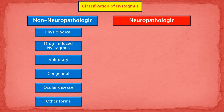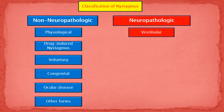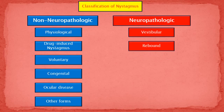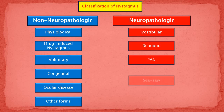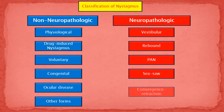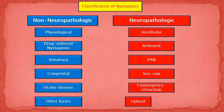Neuropathologic nystagmus includes vestibular nystagmus, rebound nystagmus, periodic alternating nystagmus, seesaw nystagmus, convergence-retraction nystagmus, upbeat nystagmus, and downbeat nystagmus.